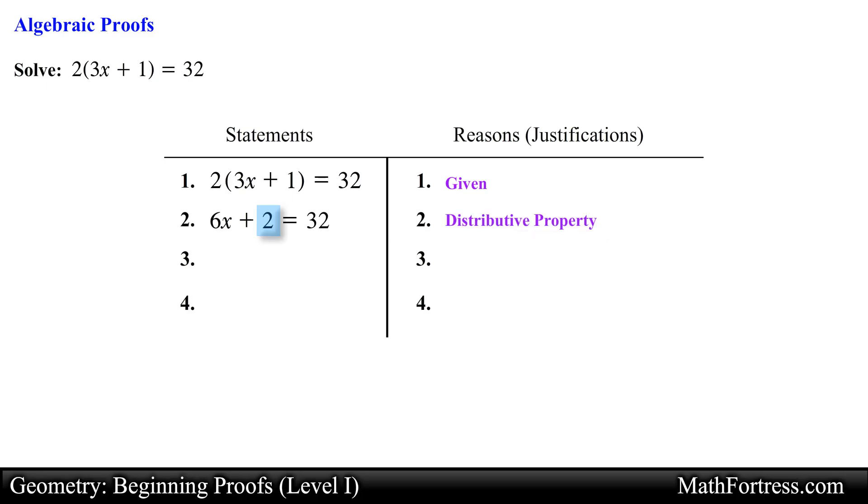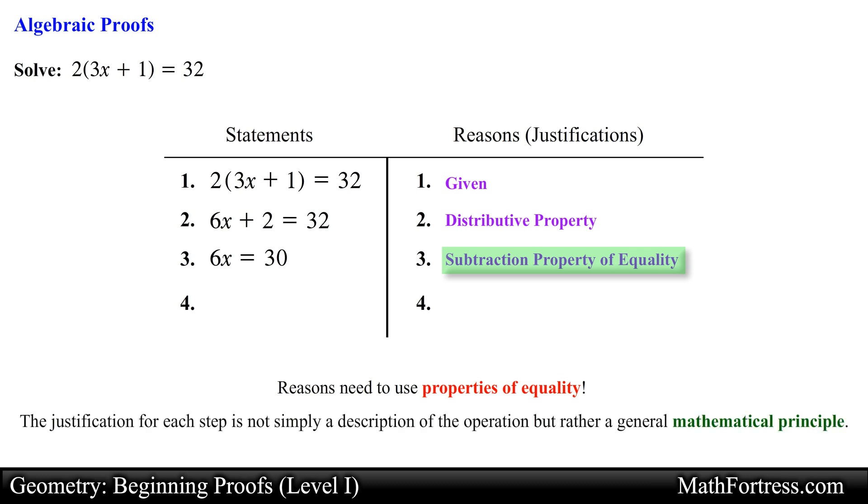Next we subtract 2 from both sides of the equation and simplify. Now this is where many students make a very common mistake. Many students would write subtracted 2 from both sides as a reason or justification. This would be an incorrect reason. The correct reason needs to make use of the properties of equality. In this case we use the subtraction property of equality. The justification for each step is not simply a description of the operation but rather a general mathematical principle. So make sure you use a mathematical principle as a justification.